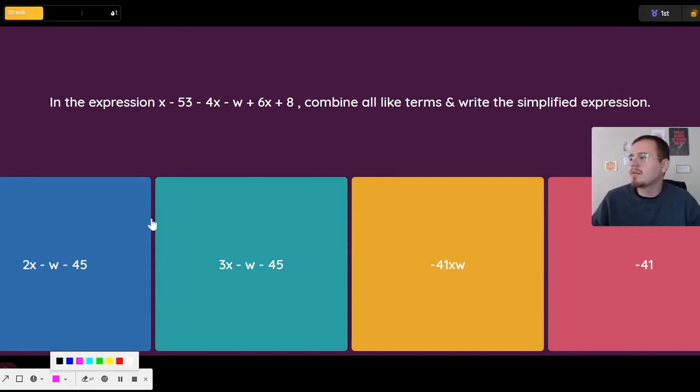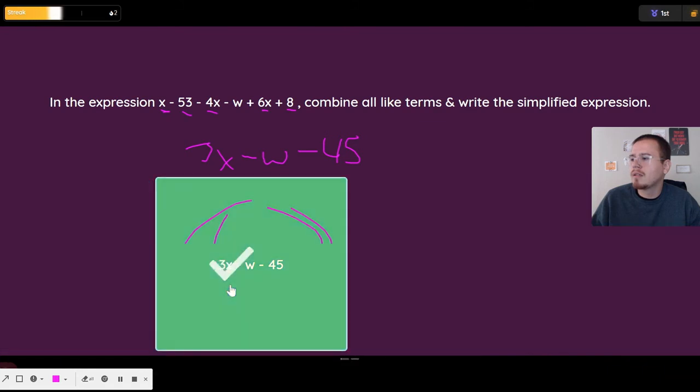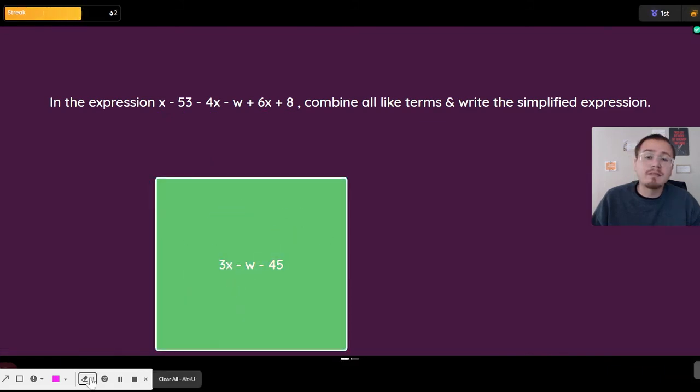Combine all the terms, write the simplified expression. Beautiful. So let's do that. You get the x's to get 3x. Well it's gotta be this one. 3x and then you combine the numbers and the w, you get negative w minus 45. Combine all the things that are similar and that's a simplified expression.